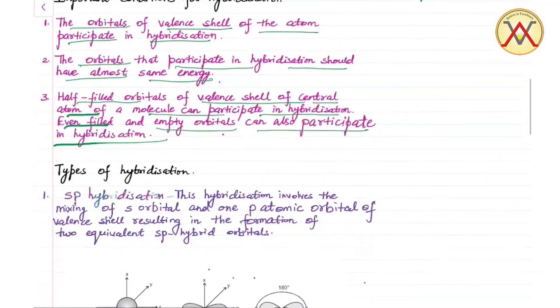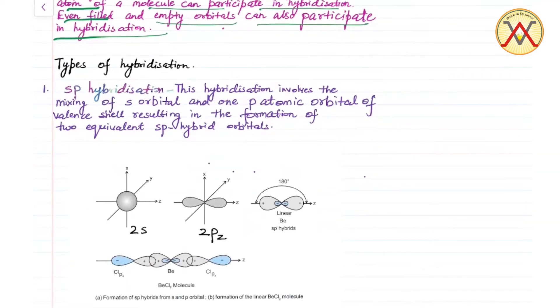Now we will discuss three types of hybridization. First is sp hybridization. This hybridization involves the mixing of s orbital and one p atomic orbital of valence shell, resulting in the formation of two equivalent sp hybrid orbitals.